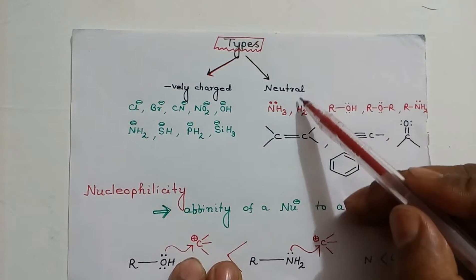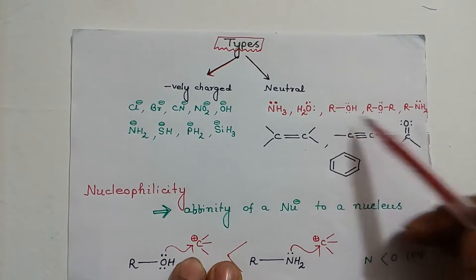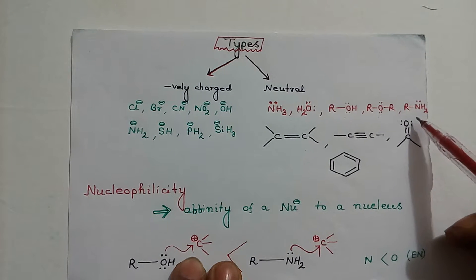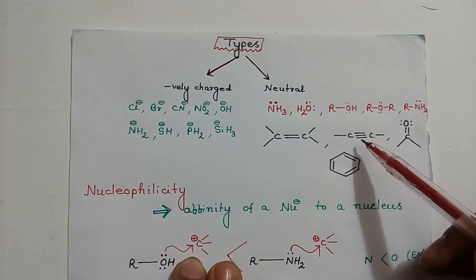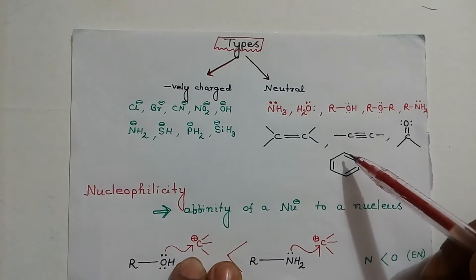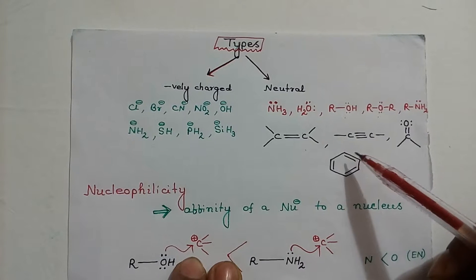Neutral nucleophiles include ammonia, water, alcohol, ether, amines, alkene, alkyne, ketone or aldehyde and benzene and lots more.